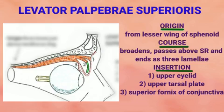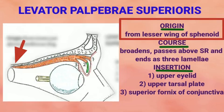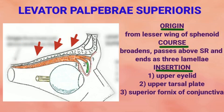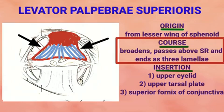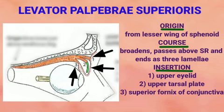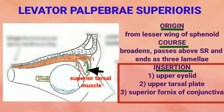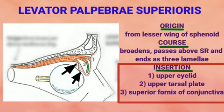The levator palpebrae superioris is a triangular sheet of muscle between the roof of the orbit and the superior rectus muscle. It originates from the undersurface of the lesser wing of the sphenoid as a narrow tendon, then broadens and becomes fleshy with a straight medial and lateral margin. The medial margin attaches to the medial palpebral ligament; the lateral margin attaches to Whitnall's tubercle on the lateral orbital margin. The broad anterior part splits into three lamellae: the upper lamella inserts into the skin of the upper eyelid, the intermediate lamella becomes modified into the involuntary superior tarsal muscle, and the lower lamella inserts into the superior fornix of the conjunctiva.